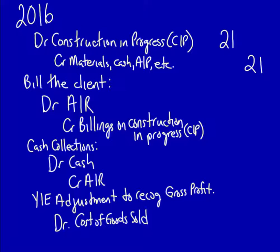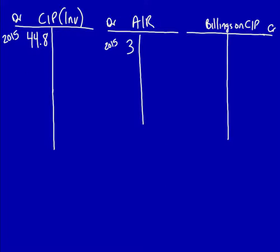Let's make the entry. We've got a debit to construction in progress for $21, and a credit to materials, cash, accounts payable — all the additional accounts that we would use throughout the year as we are incurring costs. Now let's record it in the T-accounts. I've placed the opening balances from the prior year: CIP already has an existing balance of $44.80 from 2015, accounts receivable has a balance of $3, and billings on CIP has an opening credit balance of $38. For 2016, CIP is debited $21.